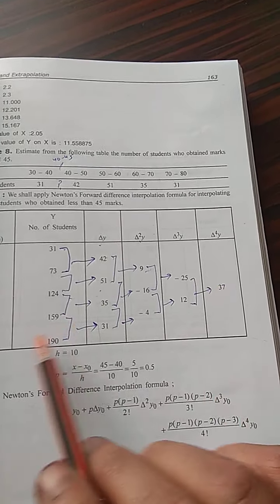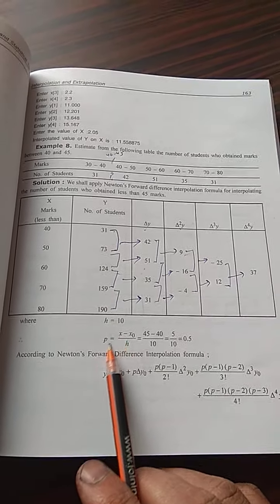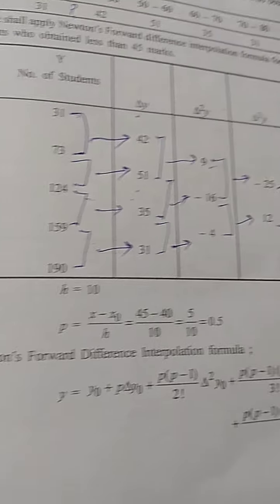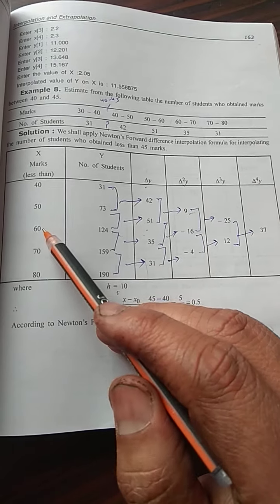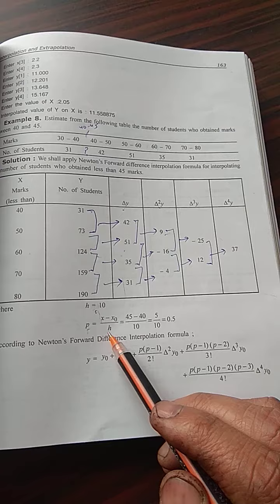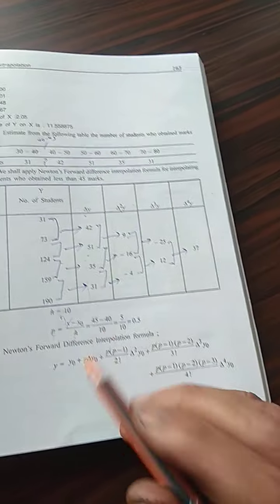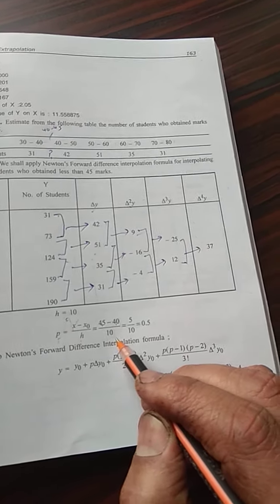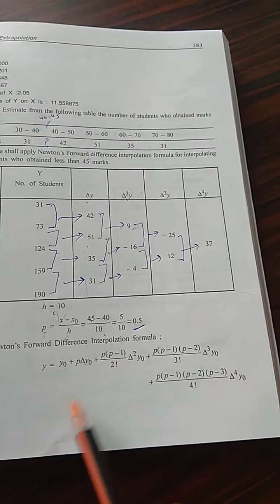Now we will apply the interpolation formula. Here h is equal to 10, which is the difference between two consecutive x values: 50 minus 40 is 10, 60 minus 50 is 10, 70 minus 60 is 10. We calculate p as x minus x-naught over h. Since the interval is between 40 and 45, we write p as 45 minus 40 over 10, which is 5 over 10, giving p equal to 0.5.